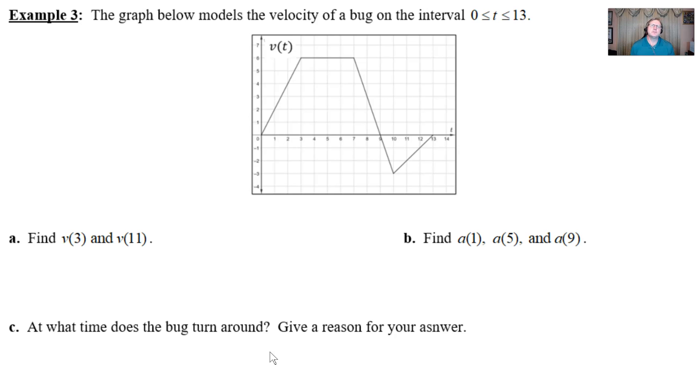For part a, probably the easiest part, when you find the velocity at time 3 and you're given a graph of velocity, there's not a whole lot of work involved. You just locate that time 3, find the corresponding v value, and we find that we get 6. So you can write v(3) = 6. For v(11), we find our 11 located down here and see a point on the graph that corresponds with the v value of negative 2.